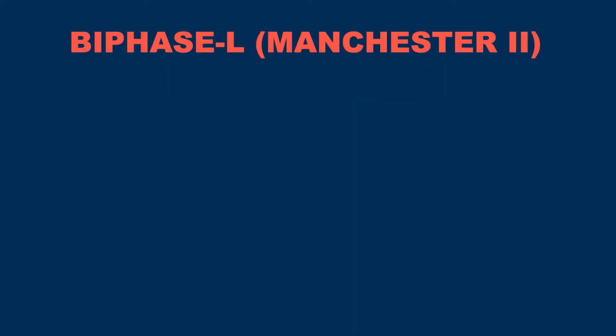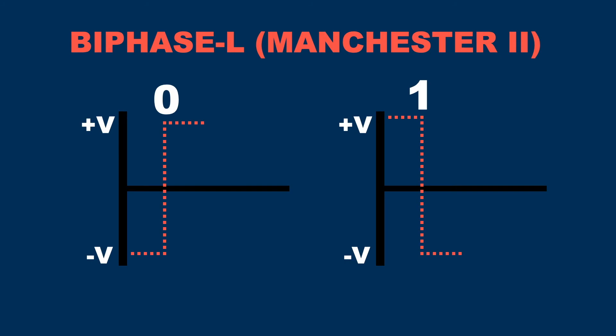So in this video, I will be using the first convention. A binary one bit is represented as a change from a positive voltage level to a negative voltage level in the middle of the bit time, and a binary zero is represented as a change from a negative voltage level to a positive voltage level in the middle of the bit time.